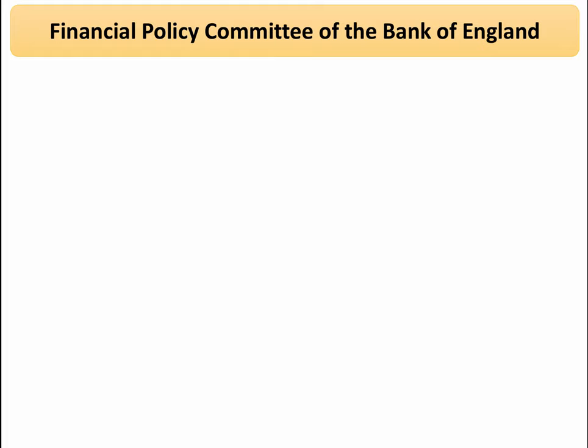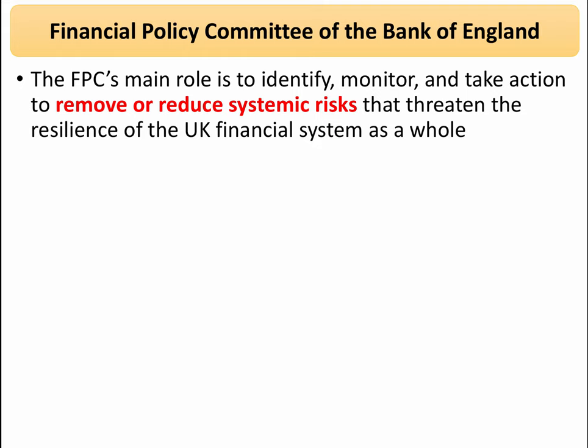The Financial Policy Committee of the Bank of England — the FPC operates within the UK Central Bank. Their main role is to identify, monitor, and crucially take action to remove or lower systemic risks. Systemic risk is where an isolated or localised factor could have a much wider consequence on the financial system. They're basically trying to reduce systemic risk that could cause domino effects and challenge the stability of the financial system as a whole.